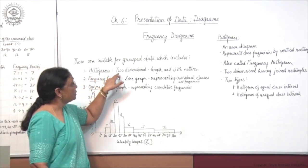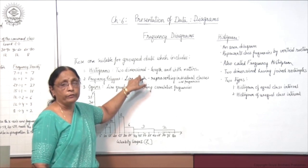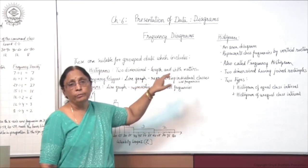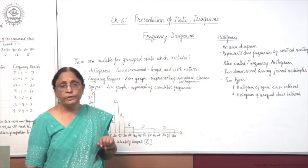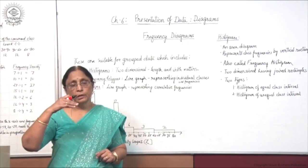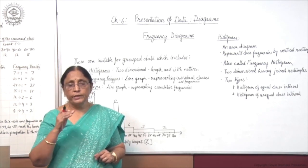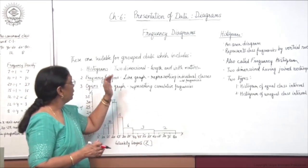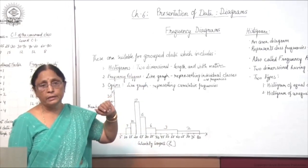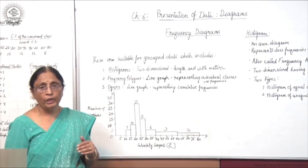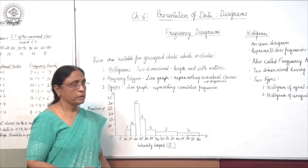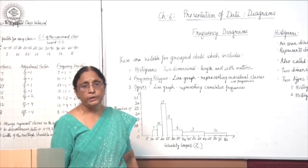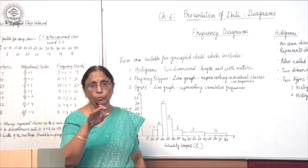First we will take histograms. These are 2-dimensional diagrams where the frequency is given along with the class interval, and both length and width matter. In the case of bar diagrams, only length matters — length is based on the value given, except in the case of percentage bar diagrams where width is also taken into consideration.